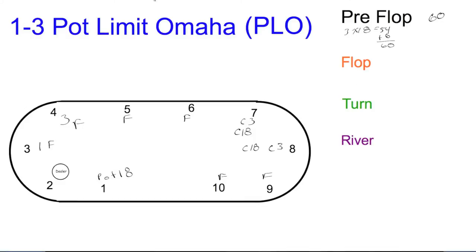We're going to move into the flop by burning and turning it. Action to seat 7—that person checks. This person leads out and bets $40.